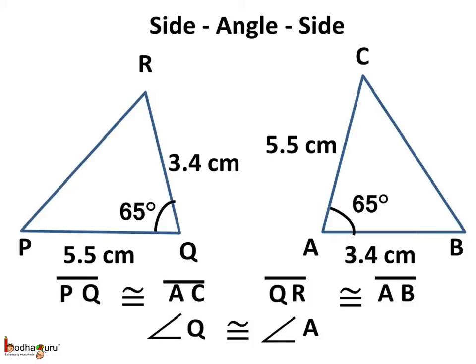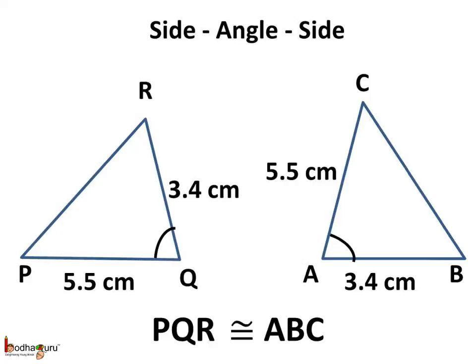Here, in the two triangles PQR and ABC, line segment PQ is congruent to line segment AC, and line segment QR is congruent to line segment AB. The angle between PQ and QR is equal to the angle between AB and AC, that is 65 degrees. Angle Q is congruent to angle A. Thus, triangle PQR and triangle ABC are congruent according to the side-angle-side criterion.